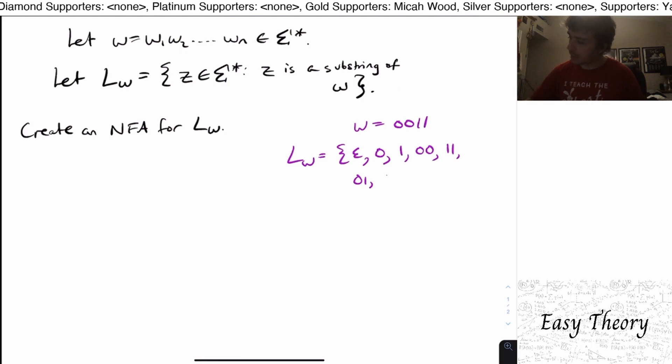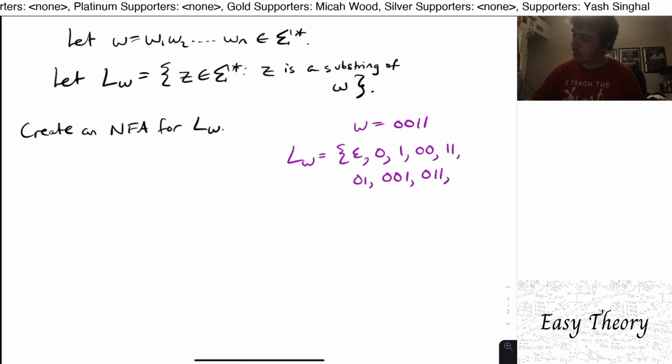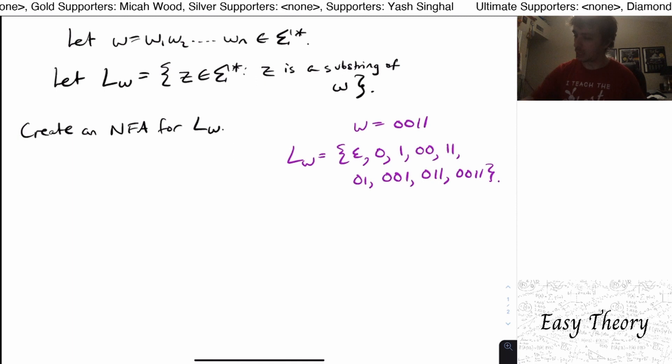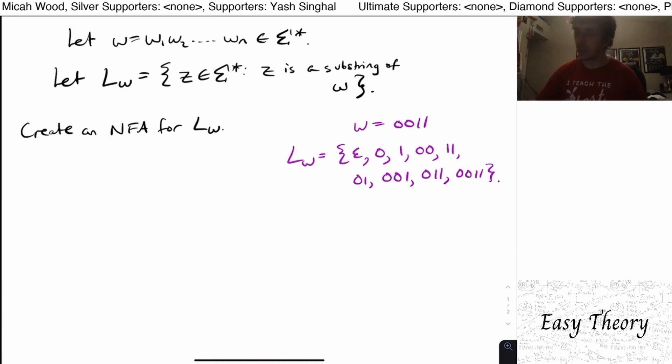What else can I pick? I can pick 001, I can pick 011, and I can pick the entire string itself. And I think that's, let's see, again, I'm doing this live. So I think that's all the possibilities because this is all the ones of length 0, the ones length 1, length 2, length 3, length 4.